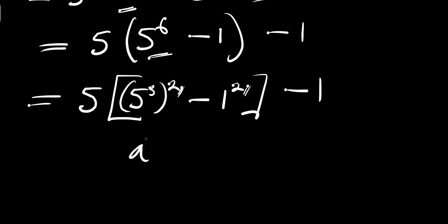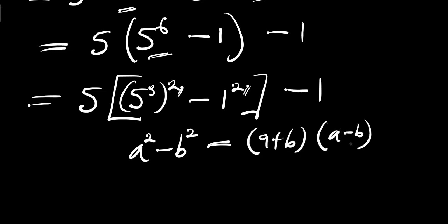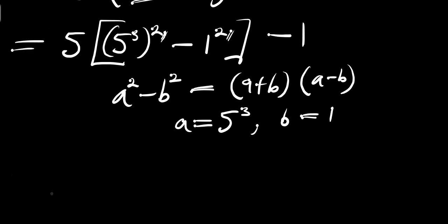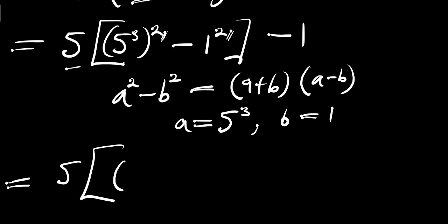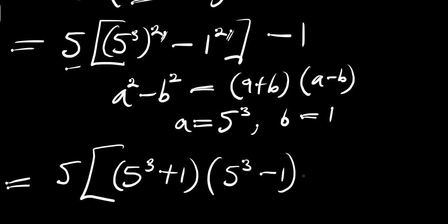Remember, if you have a squared minus b squared, this equals (a plus b)(a minus b). In this case our a equals 5 power 3 and b equals 1. Applying the difference of two squares gives us 5 times (5 power 3 plus 1)(5 power 3 minus 1), with minus 1 outside the bracket.